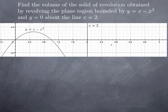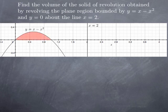As usual, we start with a sketch. Here you have the graph of x minus x squared. Of course, x minus x squared equals 0 if x is 0 or x is 1, just factoring x out. So this region bounded by y equals x minus x squared and y equals 0 is what we're going to rotate about the vertical line x equals 2, and the interval of x values we're going to consider is between 0 and 1.